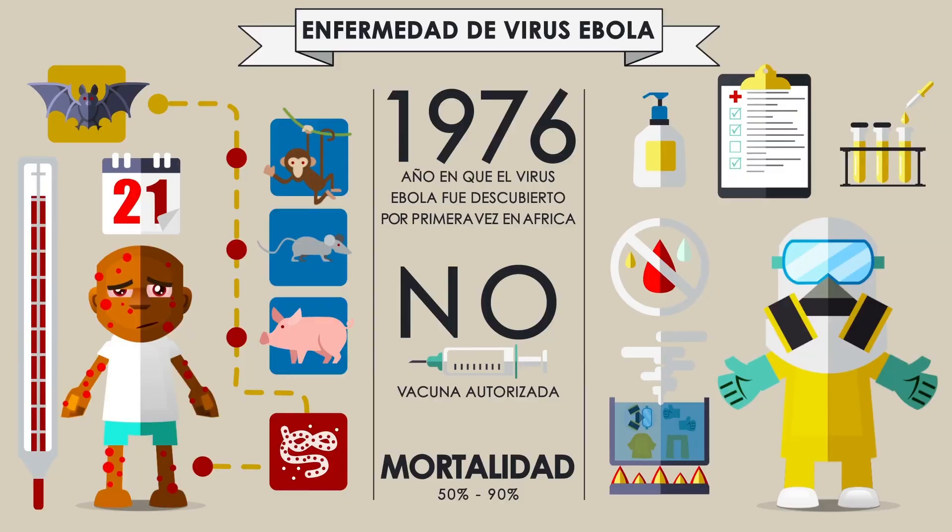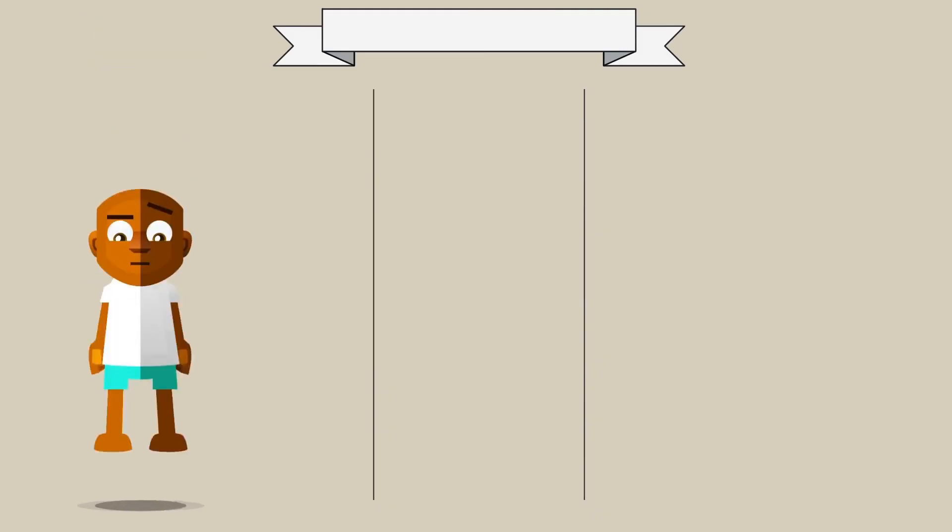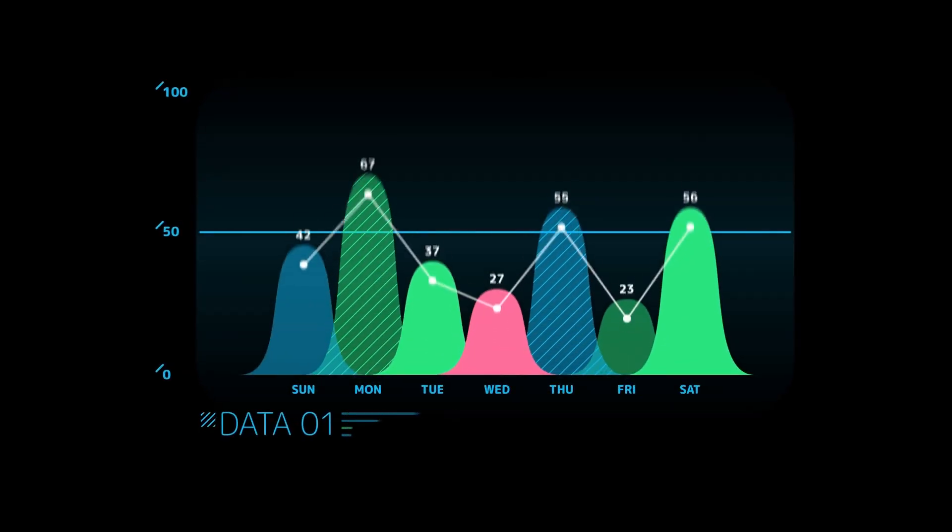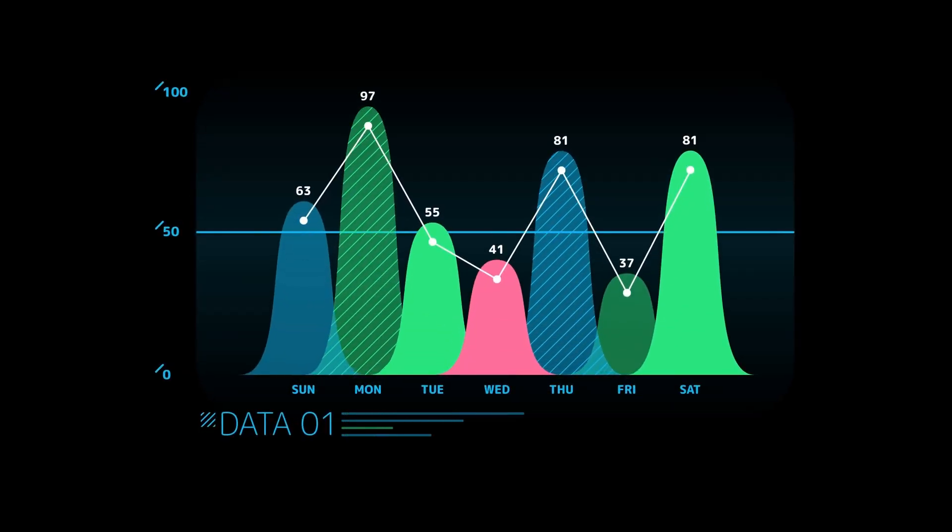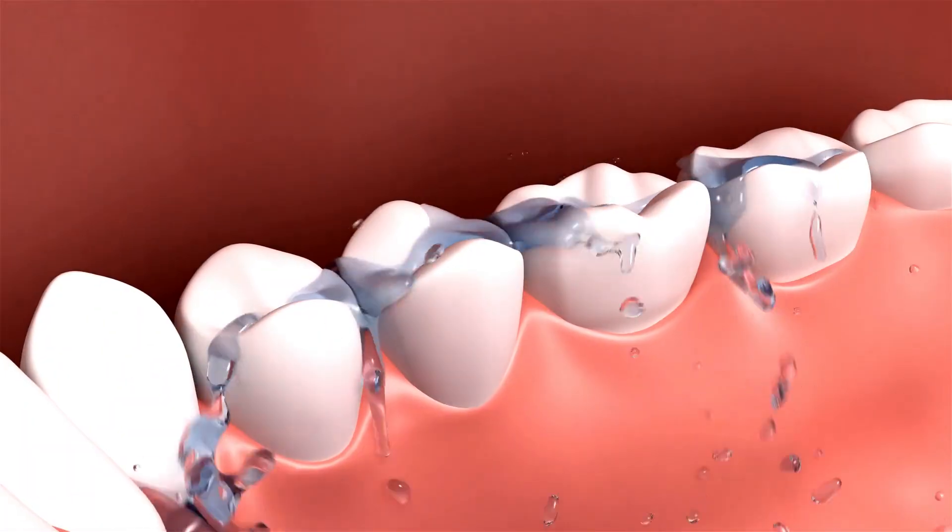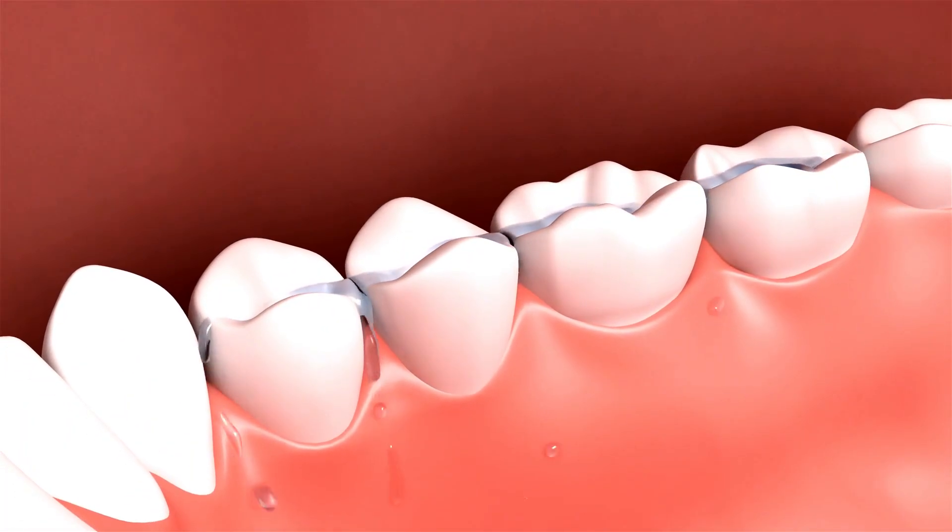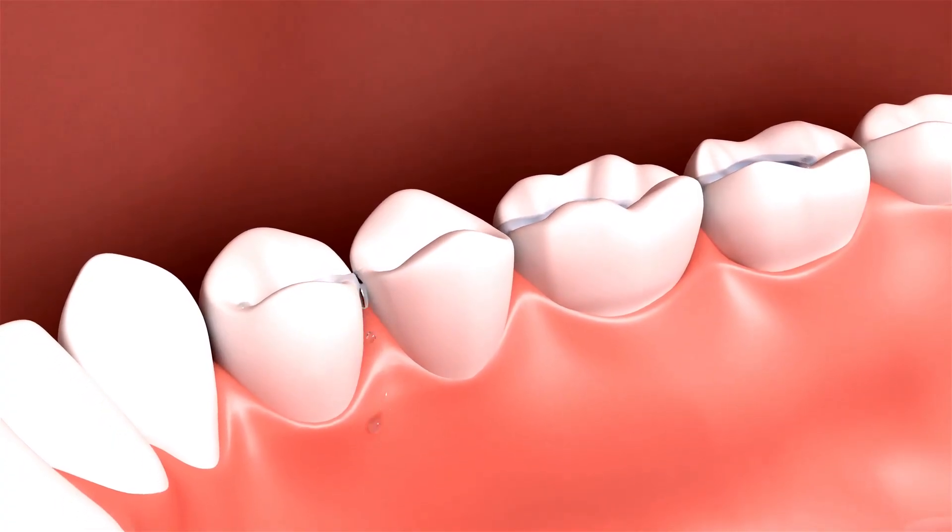This initial phase isn't about success stories—it's about rigorous safety monitoring and determining the correct non-toxic dosage. If TRG-035 proves to be safe in these adult volunteers, the path opens up for Phase 2 and beyond, where they will test efficacy—the ability to actually regrow a tooth.